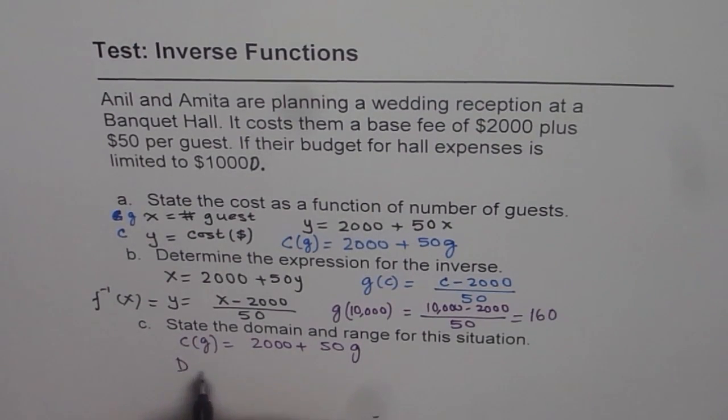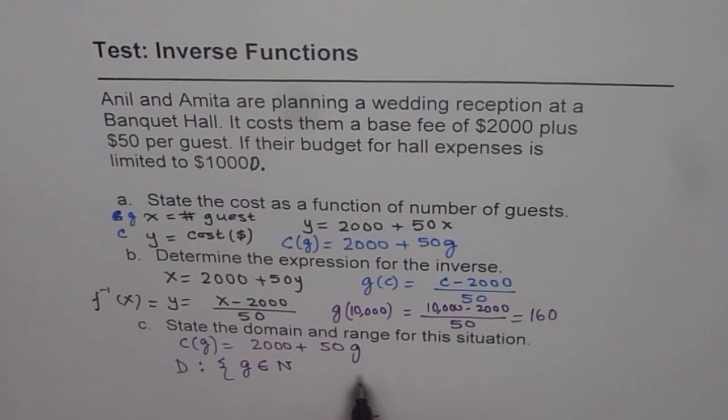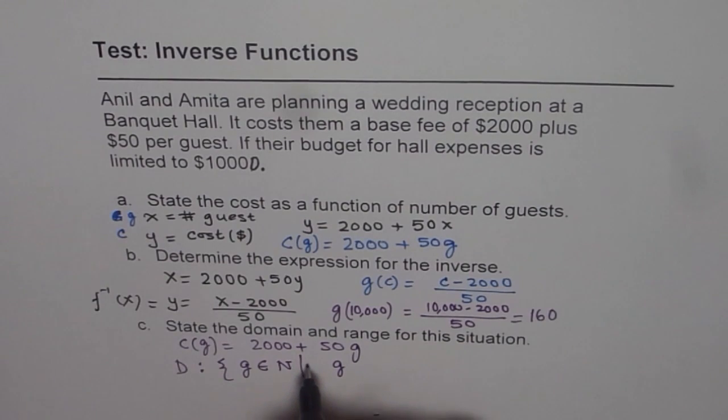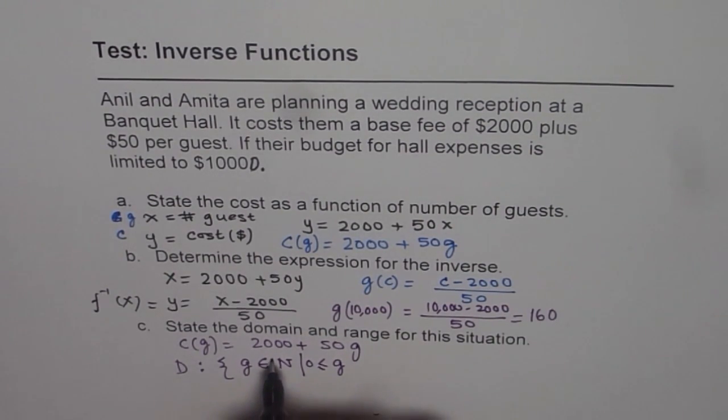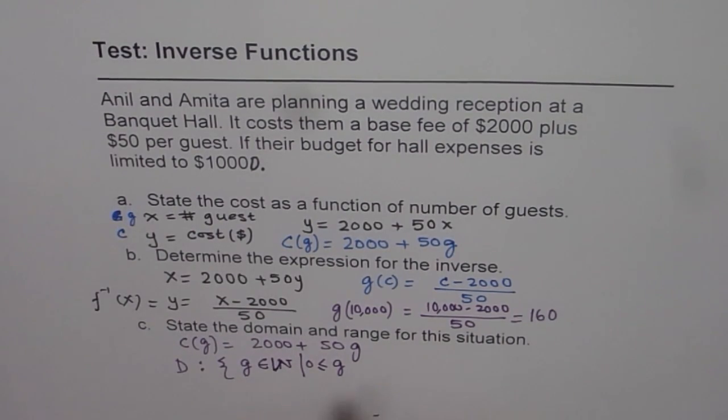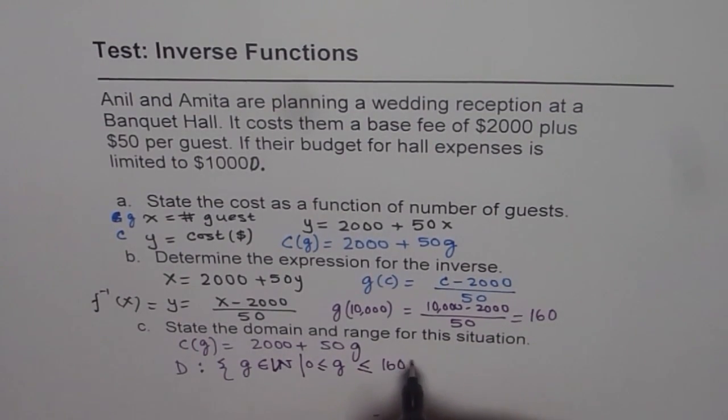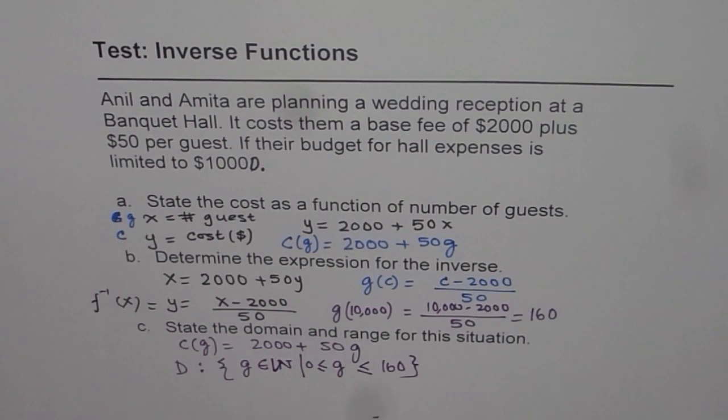Domain equals g belonging to natural numbers, because they cannot be real numbers, they are numbers 1, 2, 3, 4, like this. Where g is greater than or equal to 1. When we say natural numbers, 0 is not included. So let's make it whole numbers greater than or equal to 1 and less than or equal to 160. Maximum guests is 160. That is how we are going to write domain.